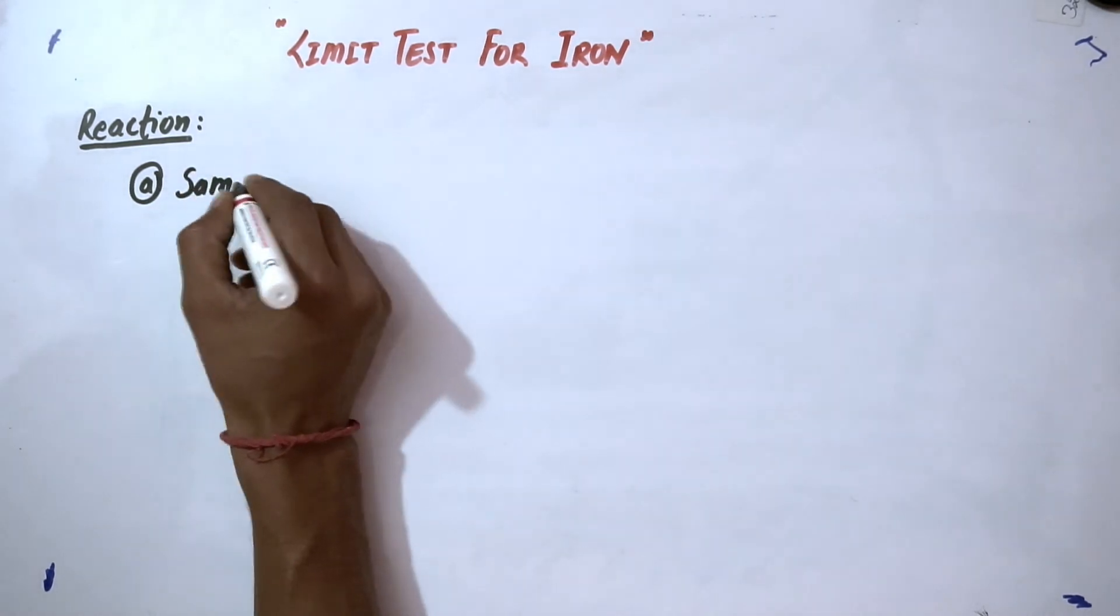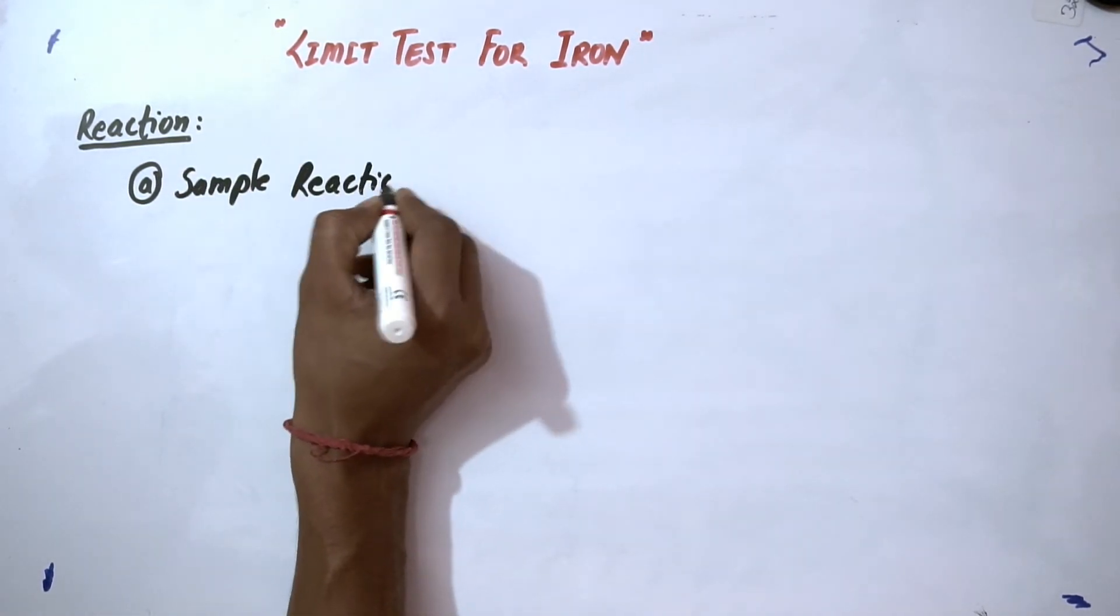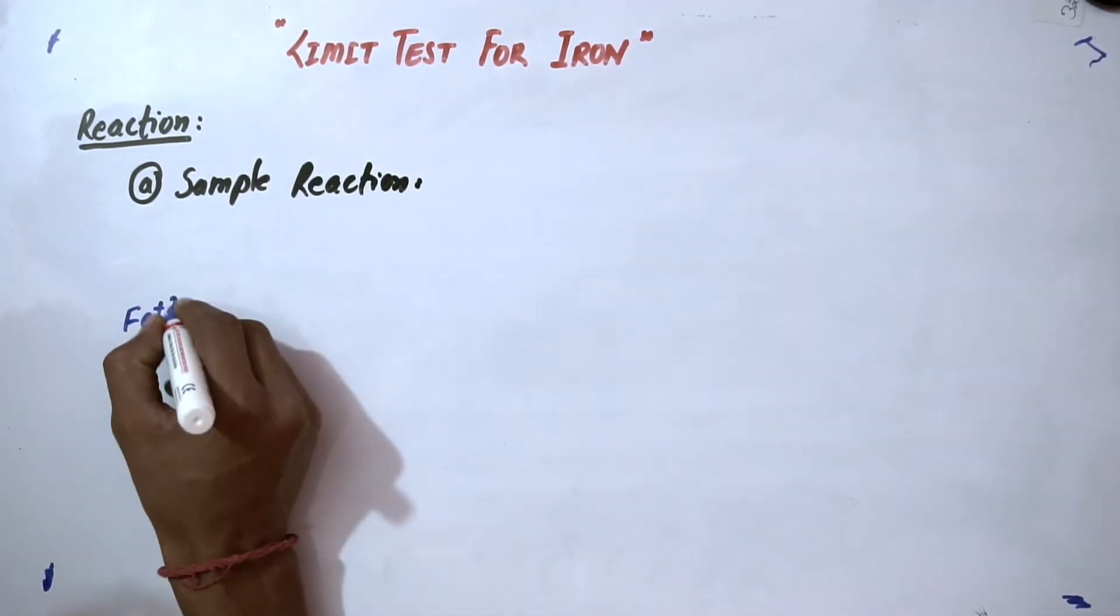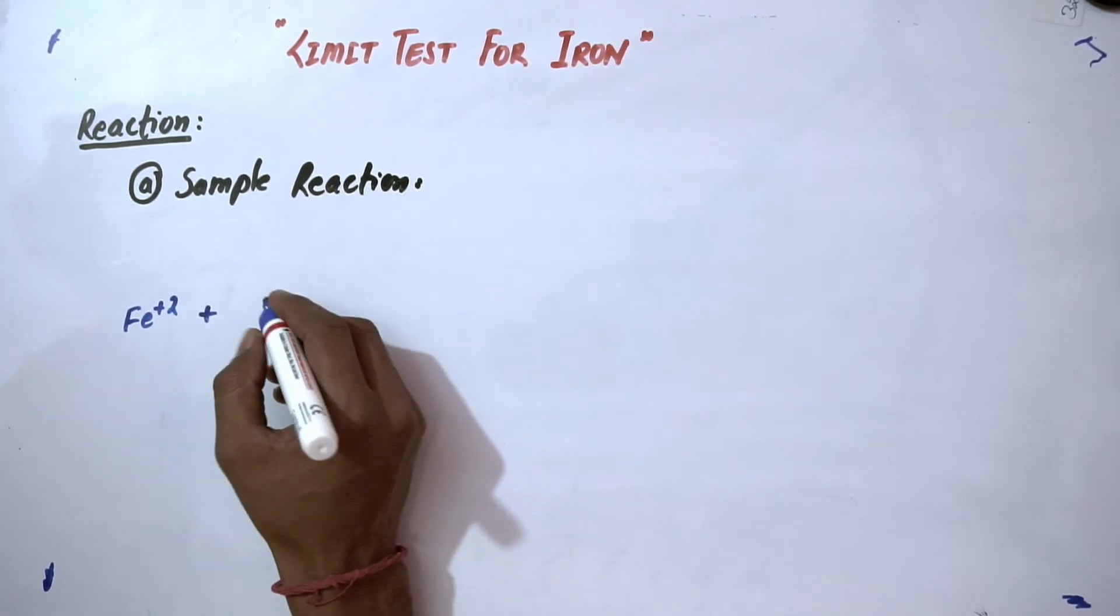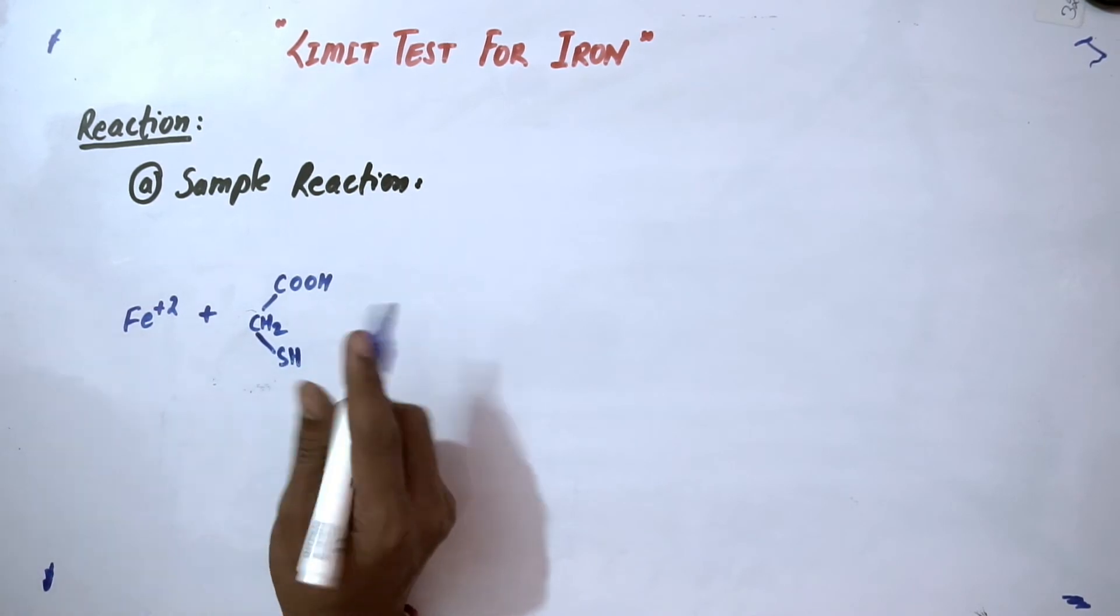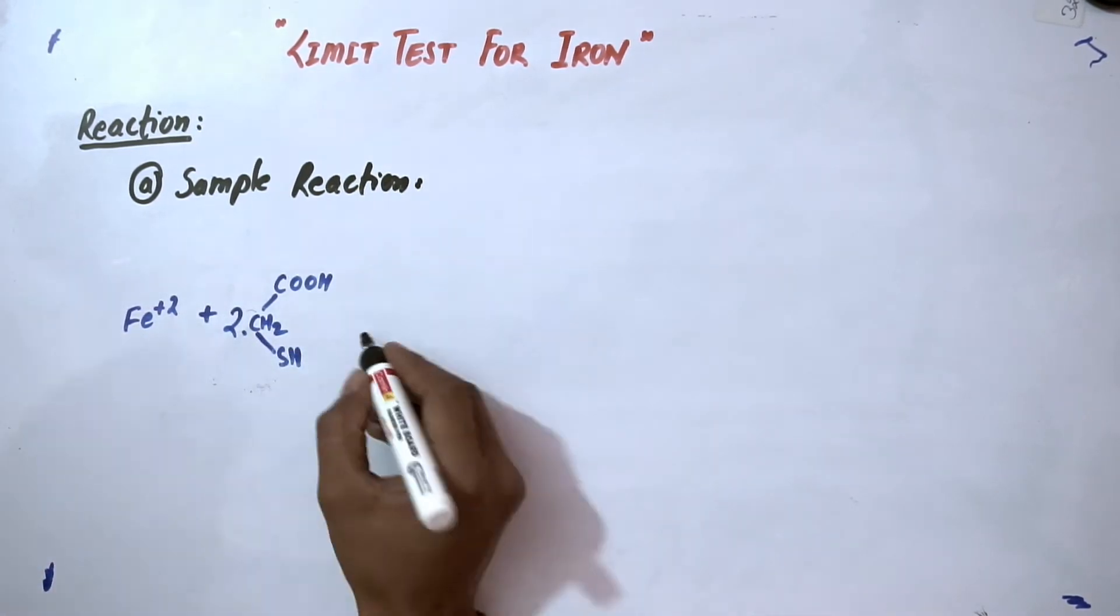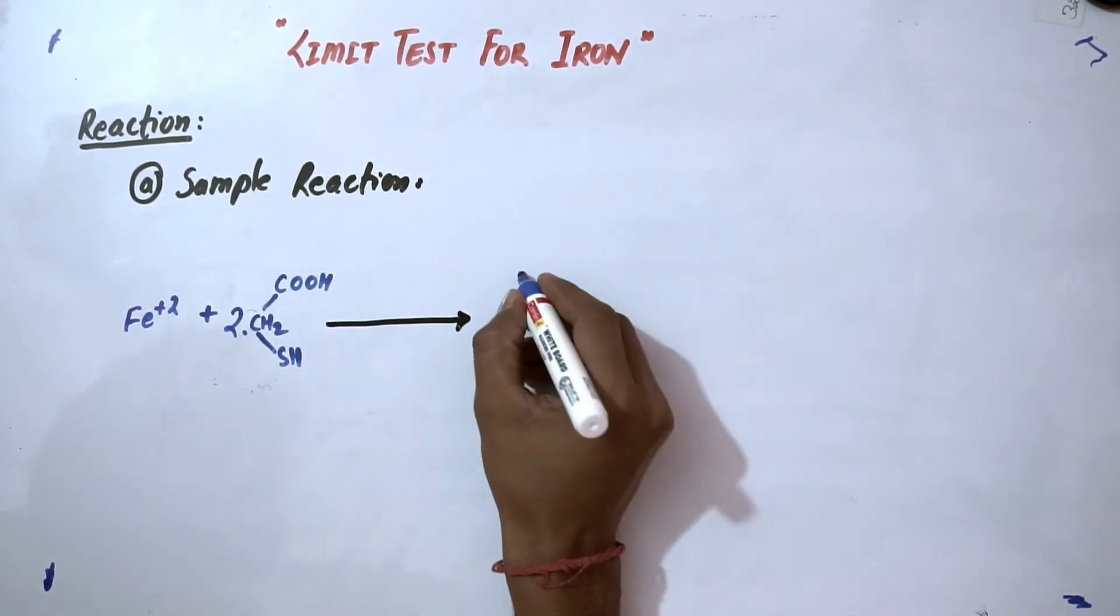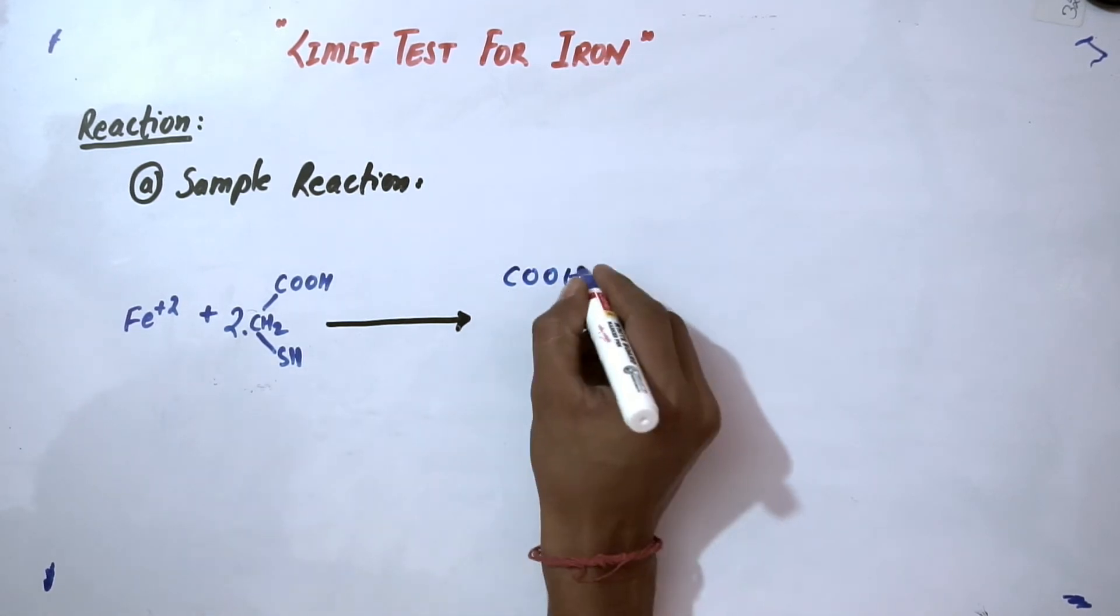For this, we are going to write the reaction first, divided into two parts: standard reaction and sample reaction. First, we will see the sample reaction. Here we are going to write ferrous, that is Fe²⁺, reacts with C=O, CH₂, and SH. This is thioglycolic acid, so two molecules of thioglycolic acid will be used.